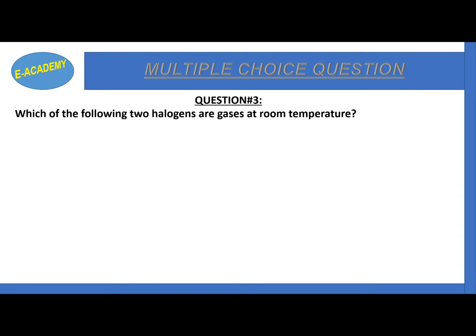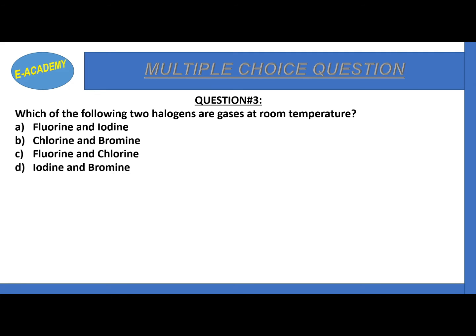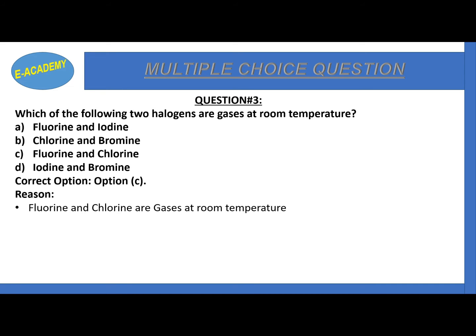Question 3. Which of the following two halogens are gases at room temperature? Options: fluorine and iodine, chlorine and bromine, fluorine and chlorine. The correct option is option C: fluorine and chlorine. Reason: fluorine and chlorine are gases at room temperature, bromine is liquid at room temperature, and iodine is solid at room temperature.